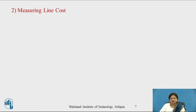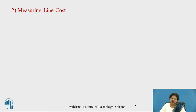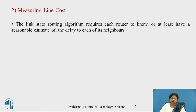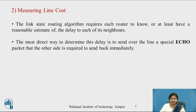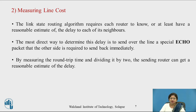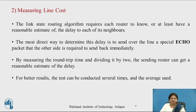In the first step, these routers know about their neighboring routers. The next step is measuring the line cost. The link state routing algorithm requires each router to know, or at least have a reasonable estimate of, the delay to each of its neighbors. The most direct way is to send a special echo packet that the other side returns immediately. By measuring the round trip time and dividing by two, the sending router gets a reasonable estimate of the delay. For better results, the test can be conducted several times and the average is used.